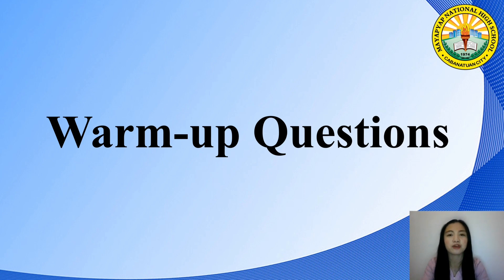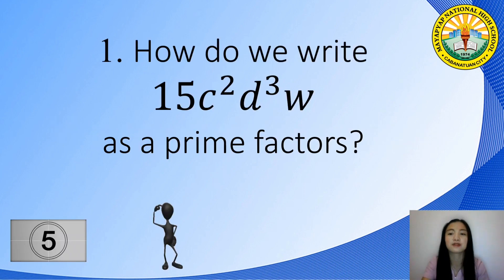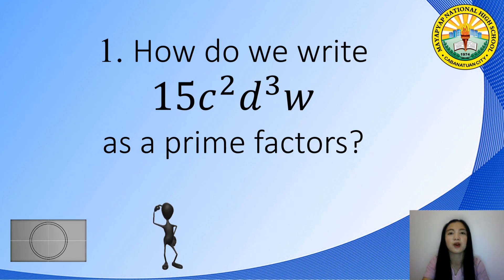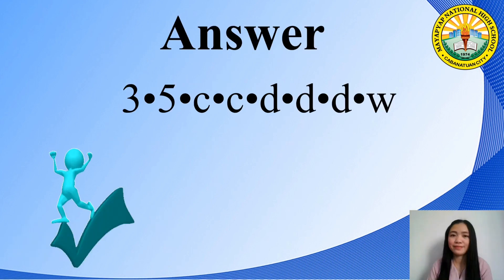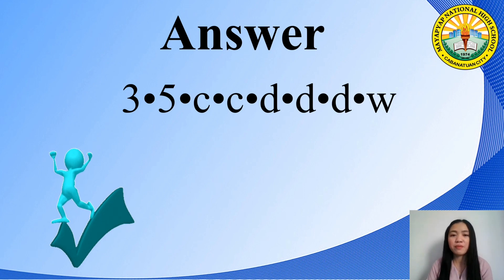Let's have some warm-up questions. The first question is: how do we write 15c squared d cubed w as a prime factor? The correct answer is 3 times 5 times c times c times d times d times d times w.